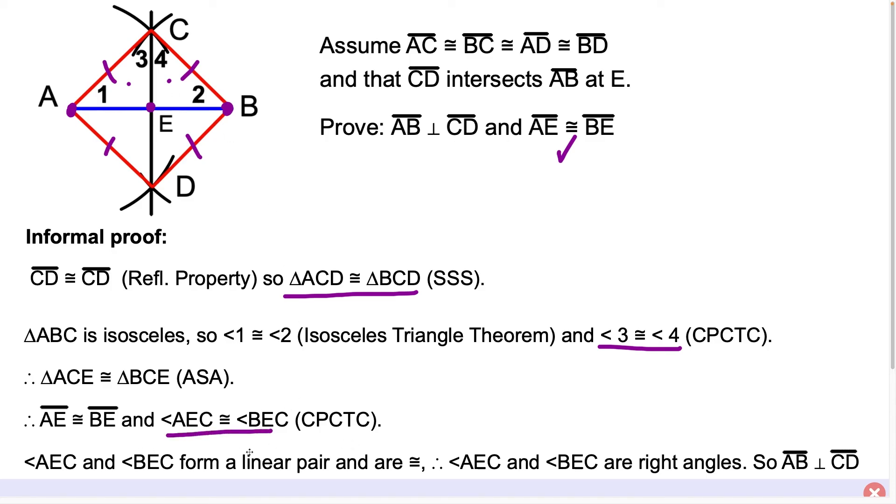Those two pieces of information combined allow us to state that angle AEC and BEC are right angles. So these angles here are right angles, and now that we've established that these are right angles, we could conclude here that line segment AB is perpendicular to line segment CD.